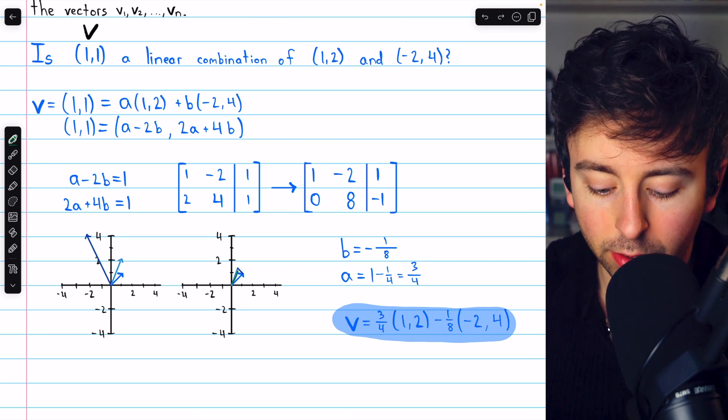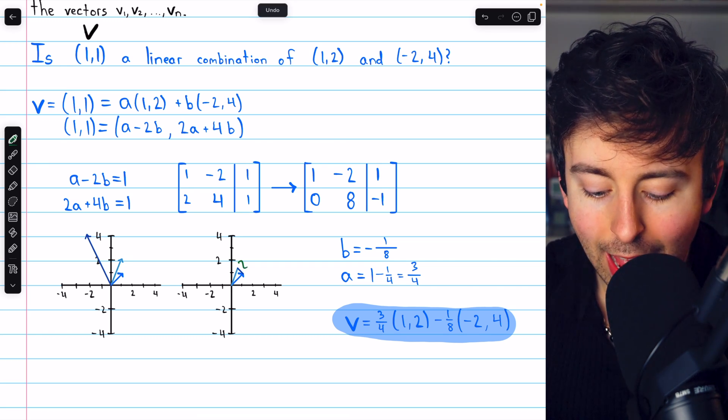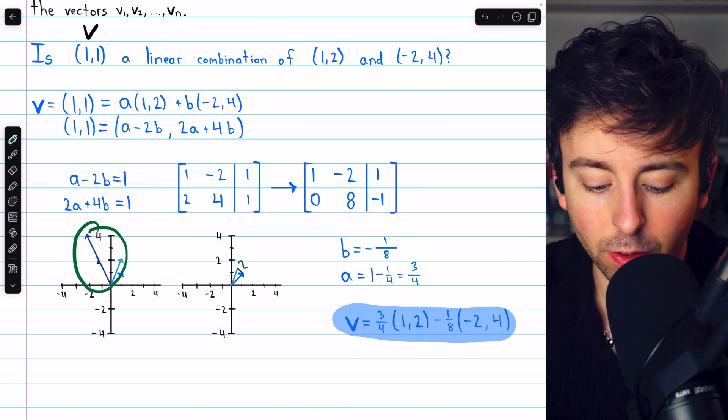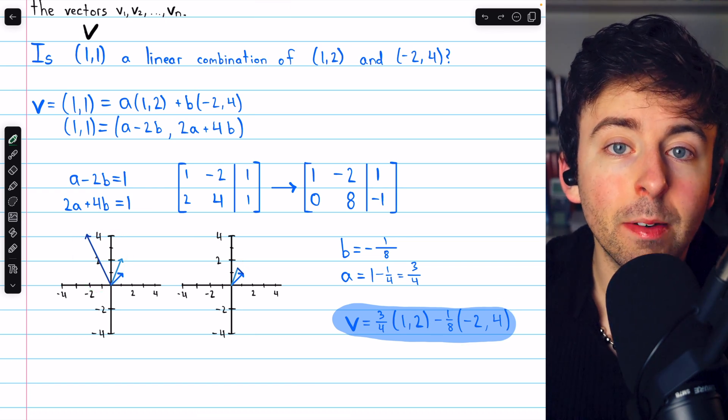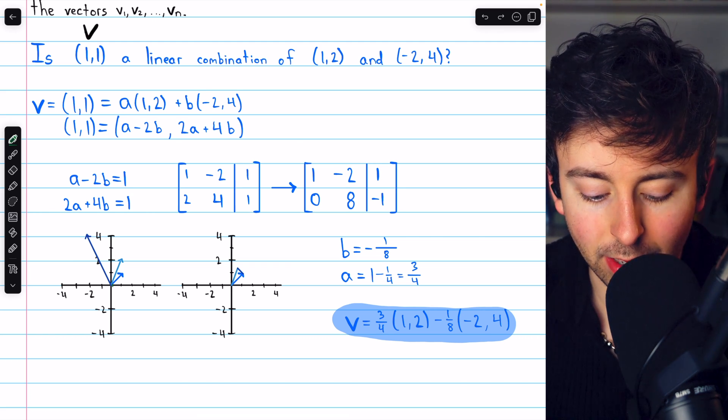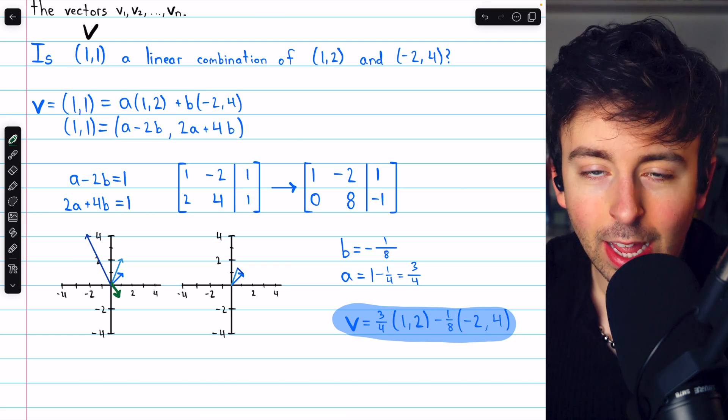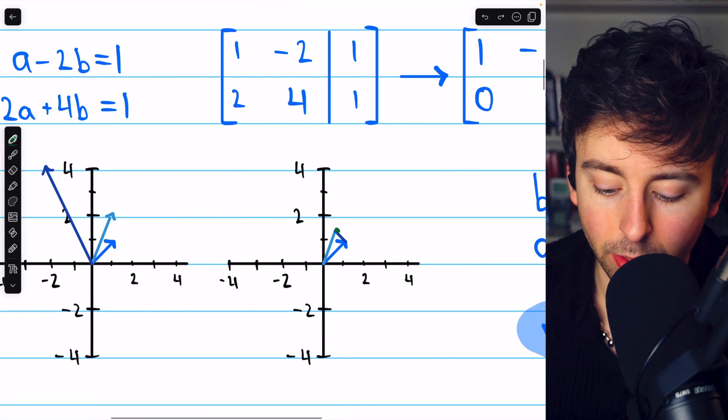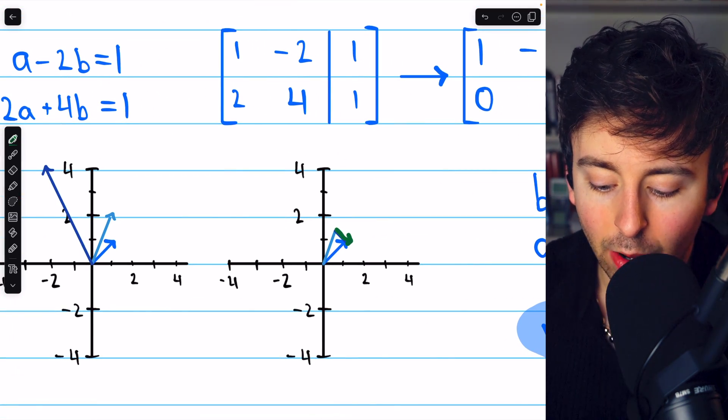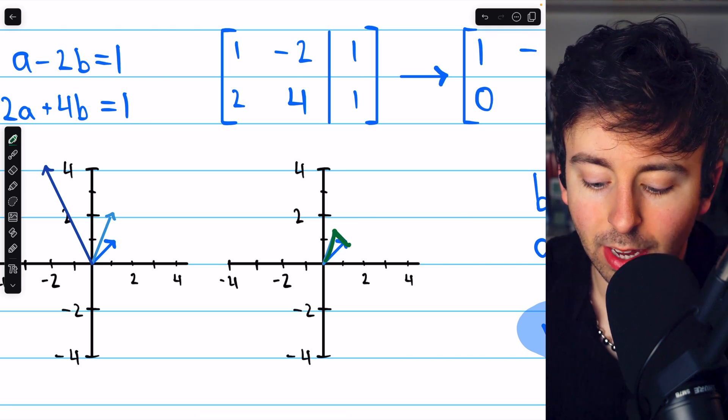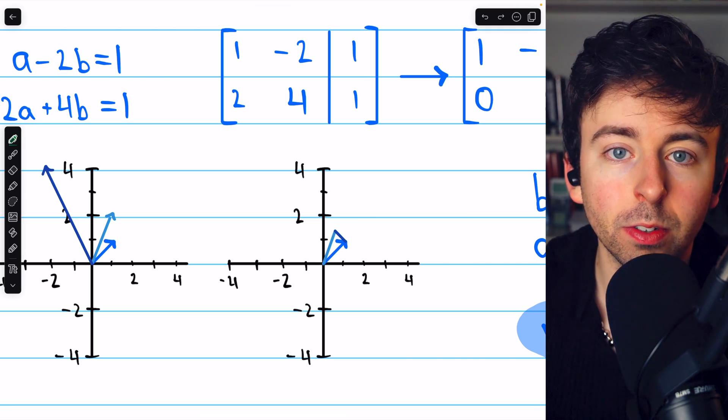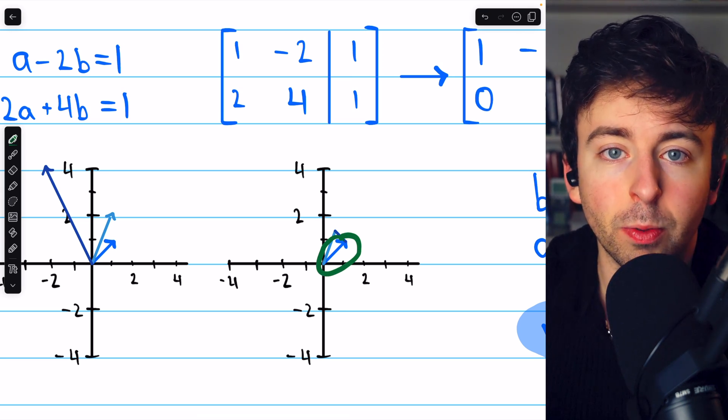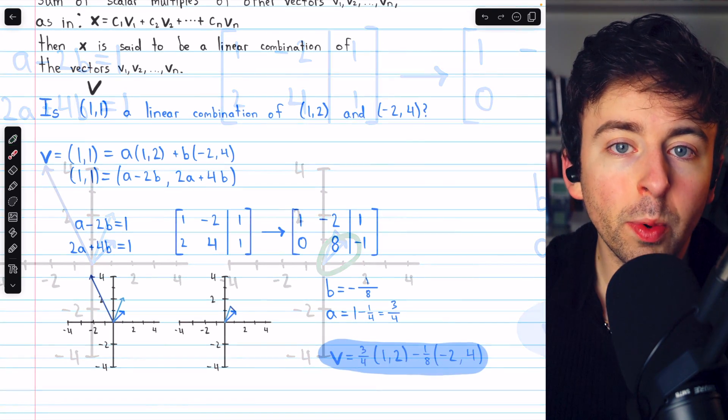And this picture kind of shows how we do that. We take 3/4 of the vector (1,2), so 3/4 of that, and then we add to it -1/8 times this vector, (-2,4). Multiplying it by -1/8, of course, has the effect of reversing its direction, and of course, it's much smaller because it's 1/8. And you can see that here. We go this direction just a little bit, and once we add those two scalar multiples of the two vectors, we have produced the original vector v, and so we've expressed v as a linear combination.